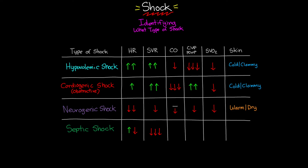Cardiac output in septic shock initially increases as the body compensates, even more so than the heart rate changes, but as things progress we will see a decline in cardiac output. As a result of profound vasodilation, blood cannot return to the heart efficiently, and leaky vessels further reduce circulating volume, leading to a profound drop in preload indicators.